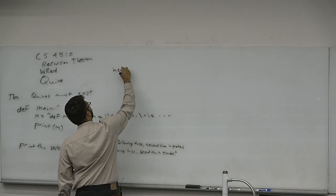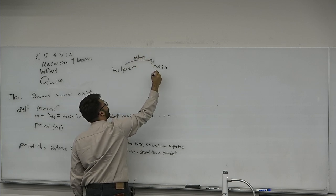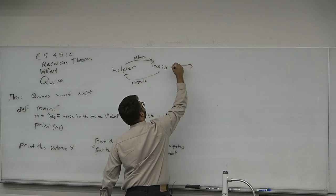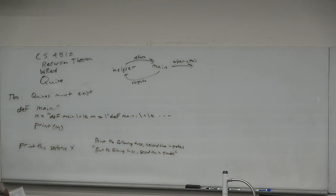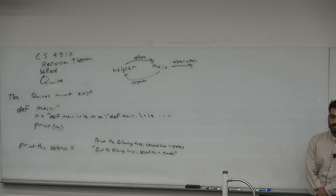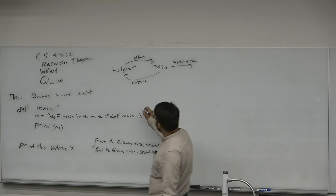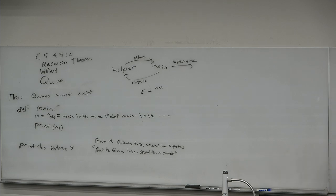Helper is going to return the code of main to main; main is going to compute helper and then output helper plus main. No immediate self-reference here — just a cycle, which is sort of the way around it. Quines are one of those code golf recreational programming activities, and you could try to come up with your own. In Python, I think the empty string is always a quine in most languages. But it's always interesting for people to come up with the shortest quines. We're going to give a longer quine with the explanation of how it works.